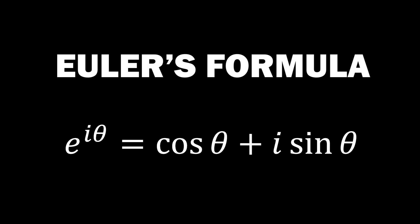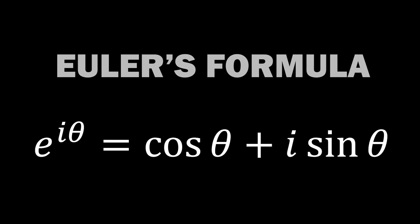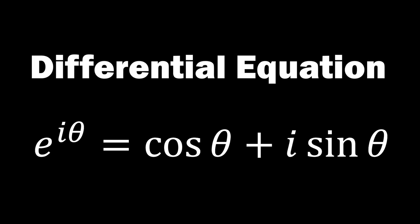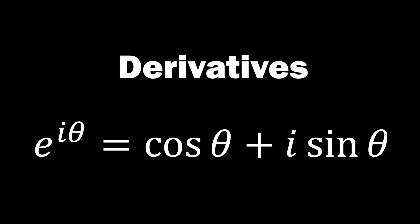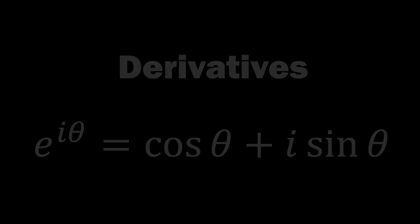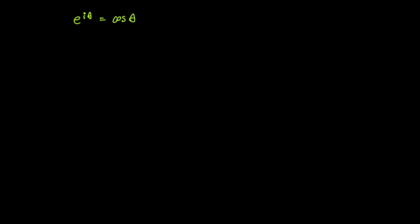Hello everyone. Today we aim to prove Euler's formula using two different methods. The first method involves using a differential equation, and the second method employs a simpler approach using derivatives. The formula we are going to prove is e to the power of i theta equals cosine theta plus i sine theta.